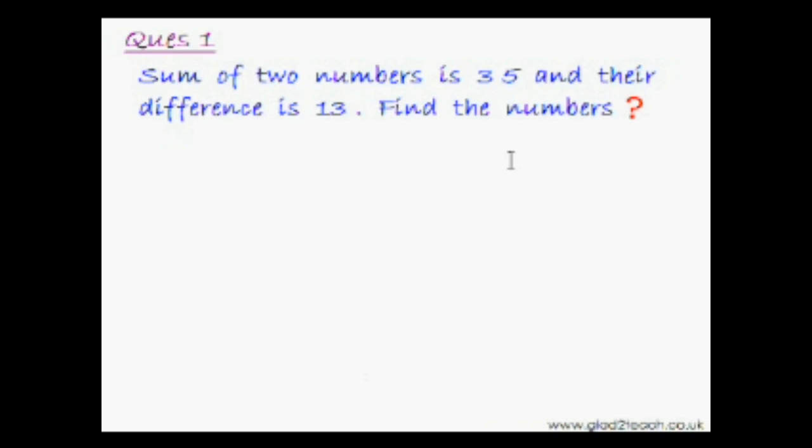So now let me do it. Since here there are two unknown things, the easiest way to solve this question would be to take two variables that is x and y. So let one number be x and the other number be y.